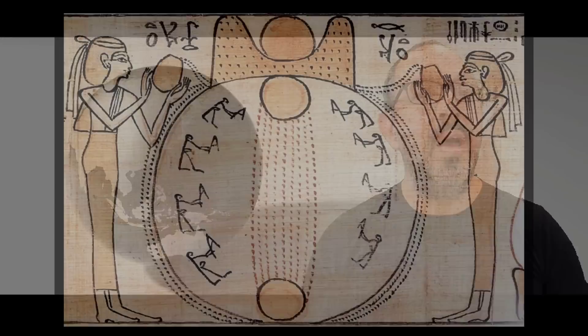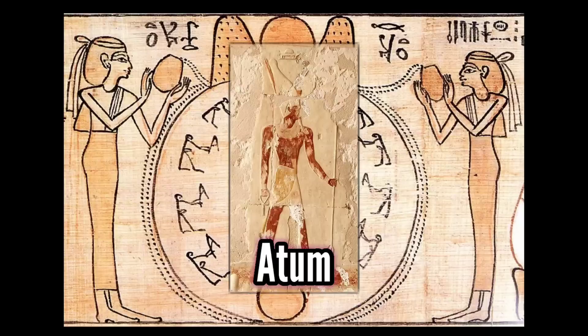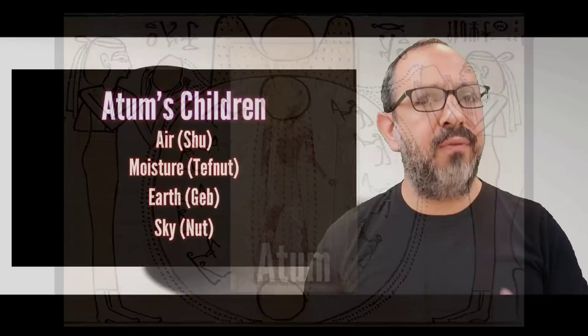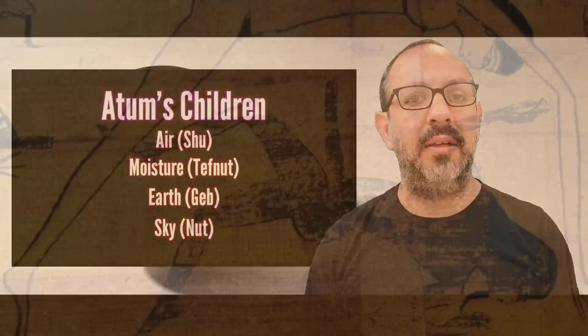On top of this hill, the god Atum appeared — he created himself. Then from him, all the other gods were created. Atum had four children that represented air, moisture, earth, and sky. Then the earth and sky gods, Geb and Nut, produced four more gods: Osiris, Isis, Seth, and Nephthys.